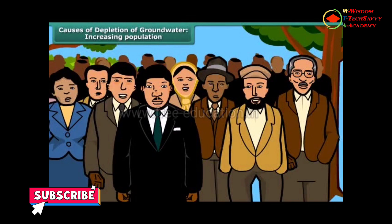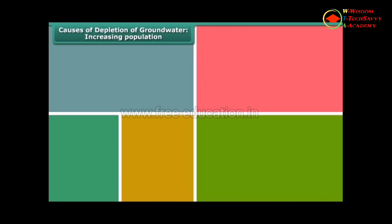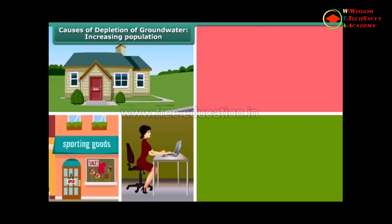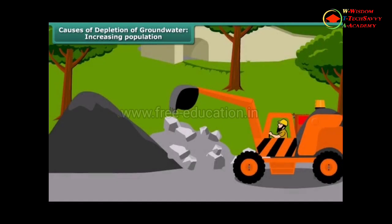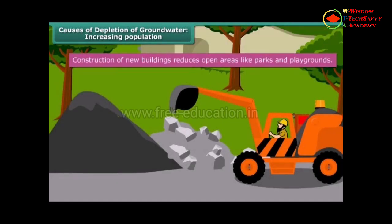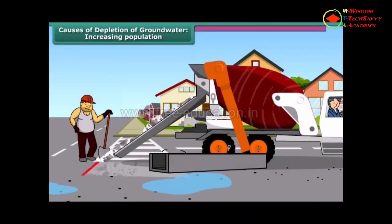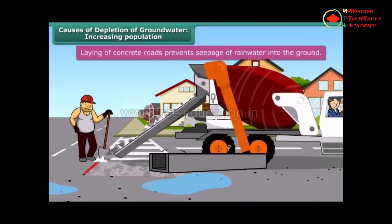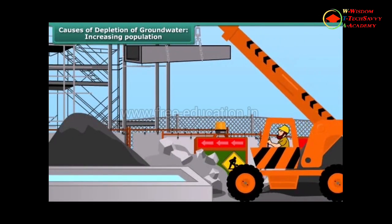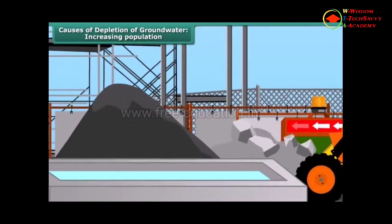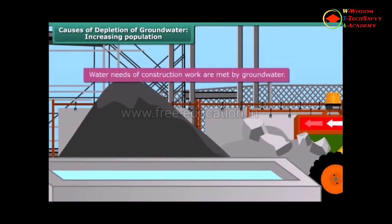World population, as we all know, is increasing fast. People need more space for houses, shops, offices, roads and pavements. Construction of new buildings reduces open areas like parks and playgrounds. Laying of concrete roads prevents seepage of rain water into the ground. Moreover, a large quantity of water is required for construction work. Ground water is often used for this purpose. All these factors lead to the depletion of ground water.